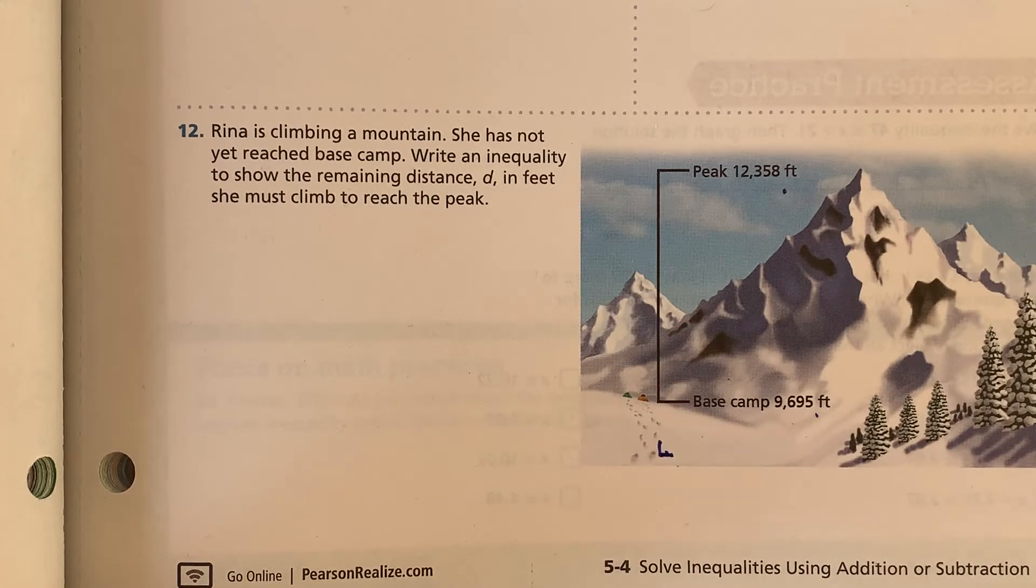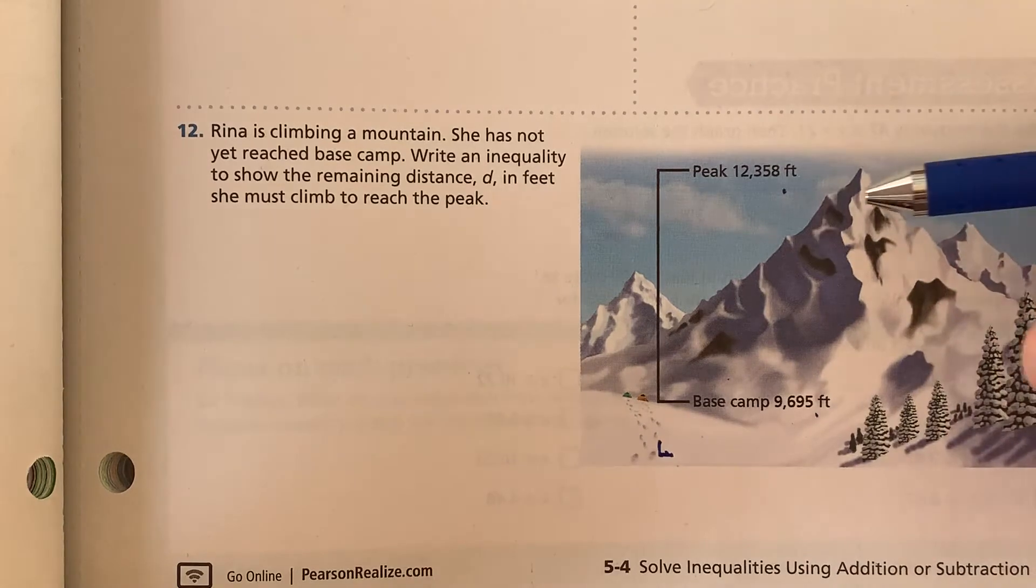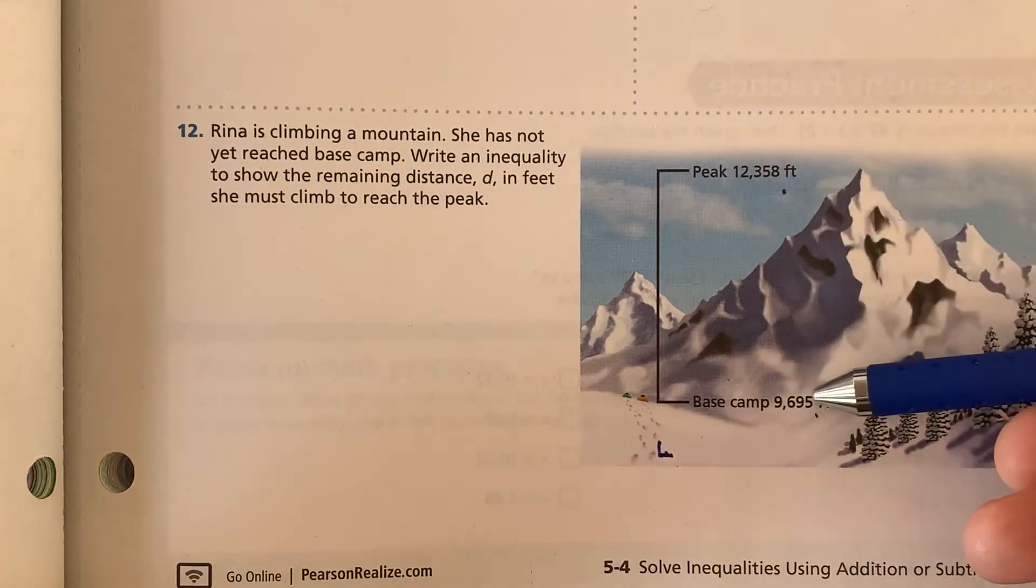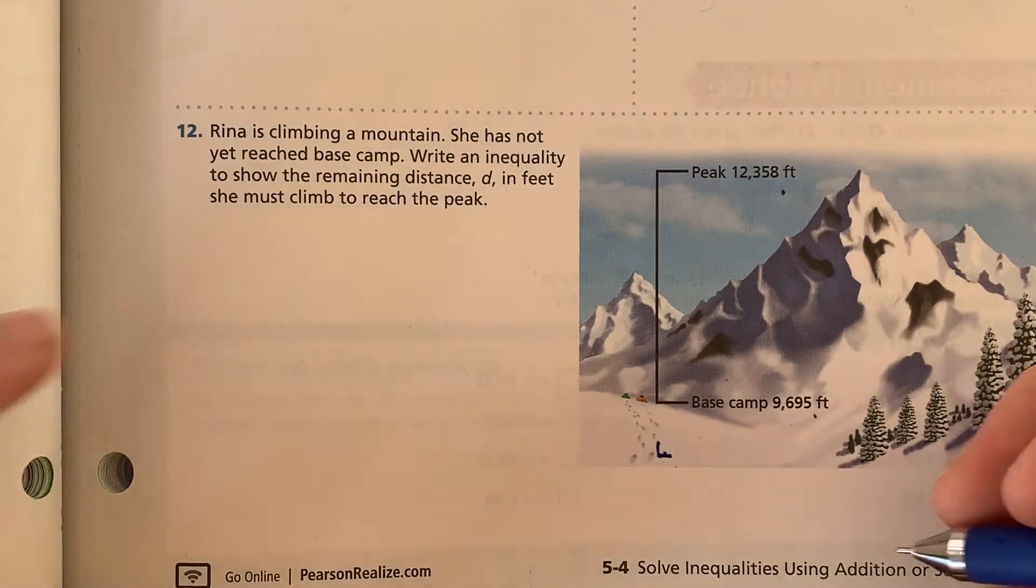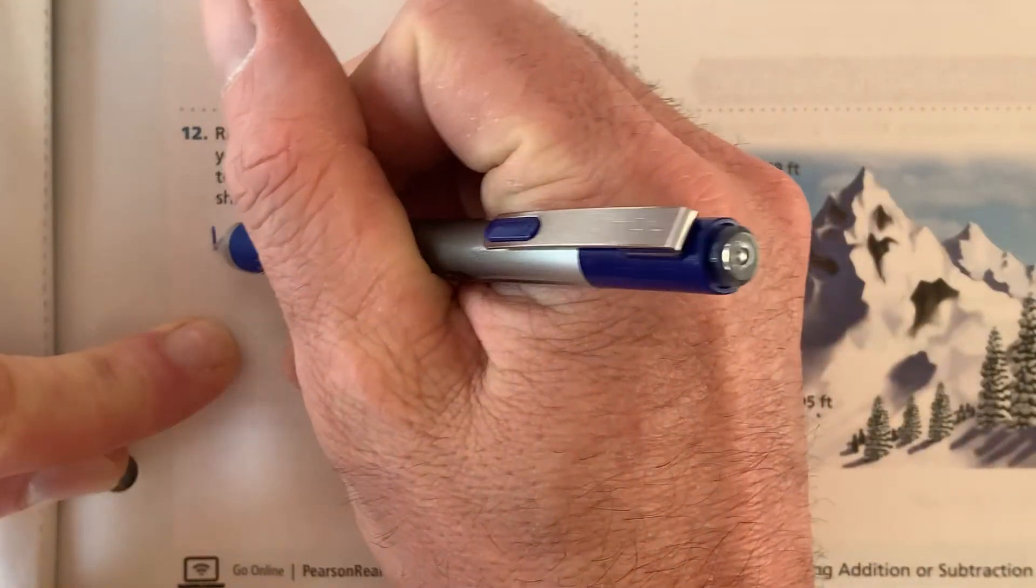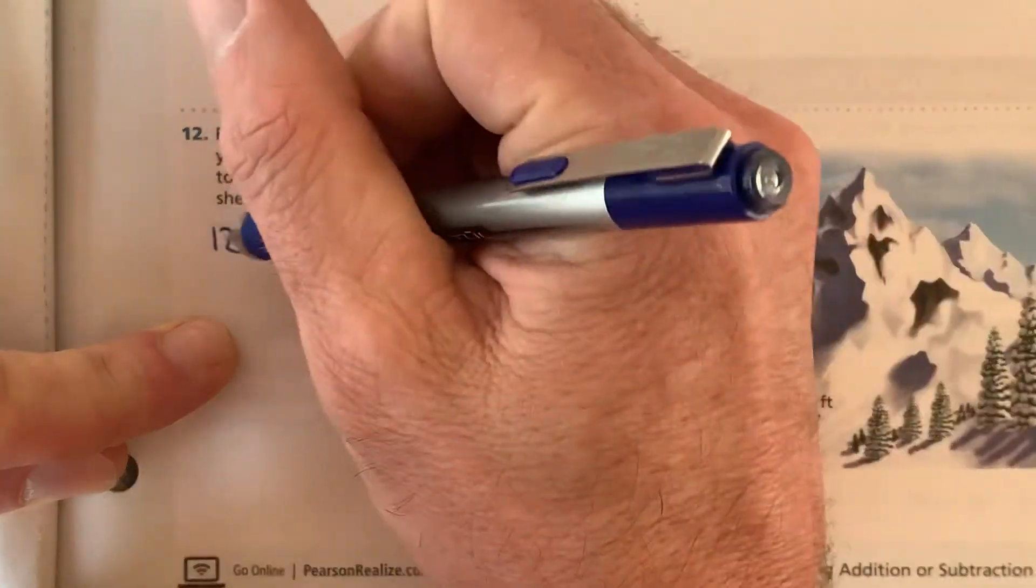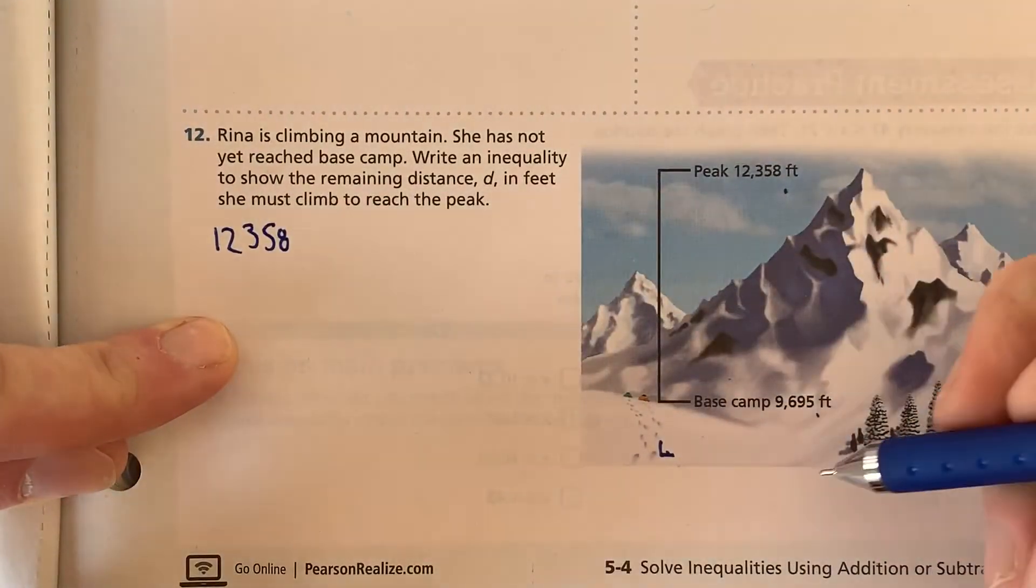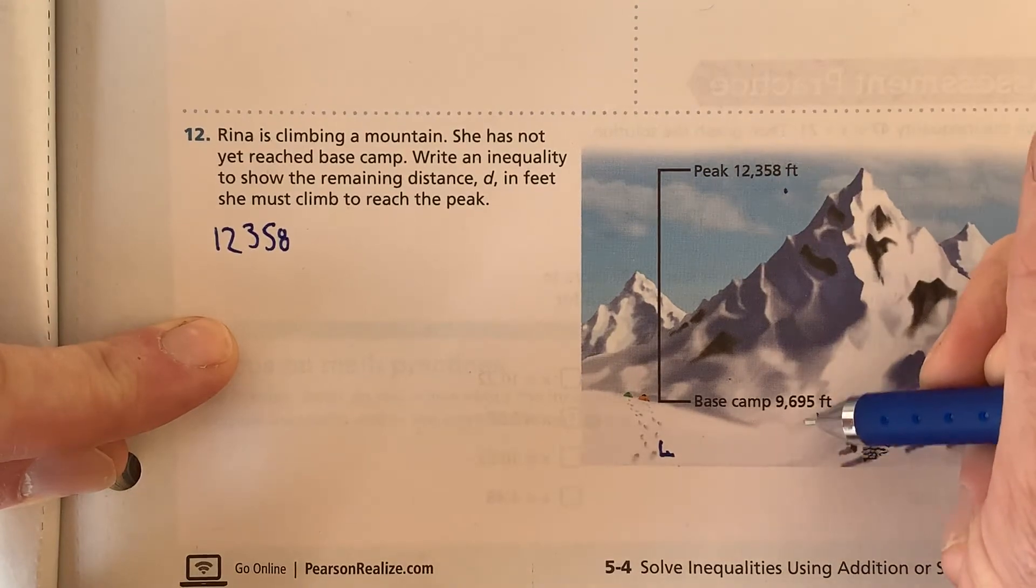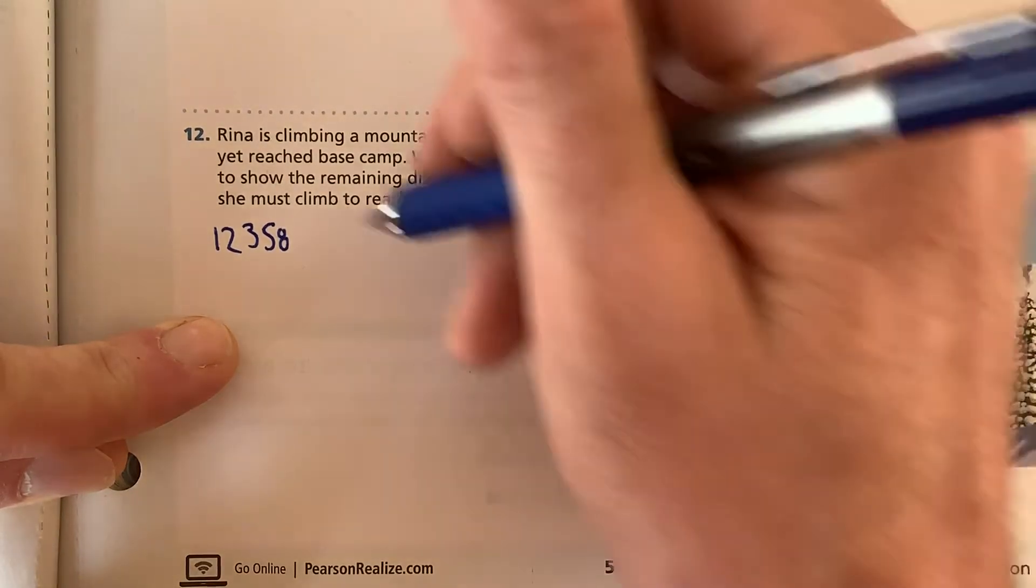Elevation problems can be a little bit tricky because we're working with 12,000 and 9,000 and not everything is starting at zero. So we look at what we know. We know that the peak is at 12,358 feet. And what else do we know? We know base camp is at 9,695 feet.